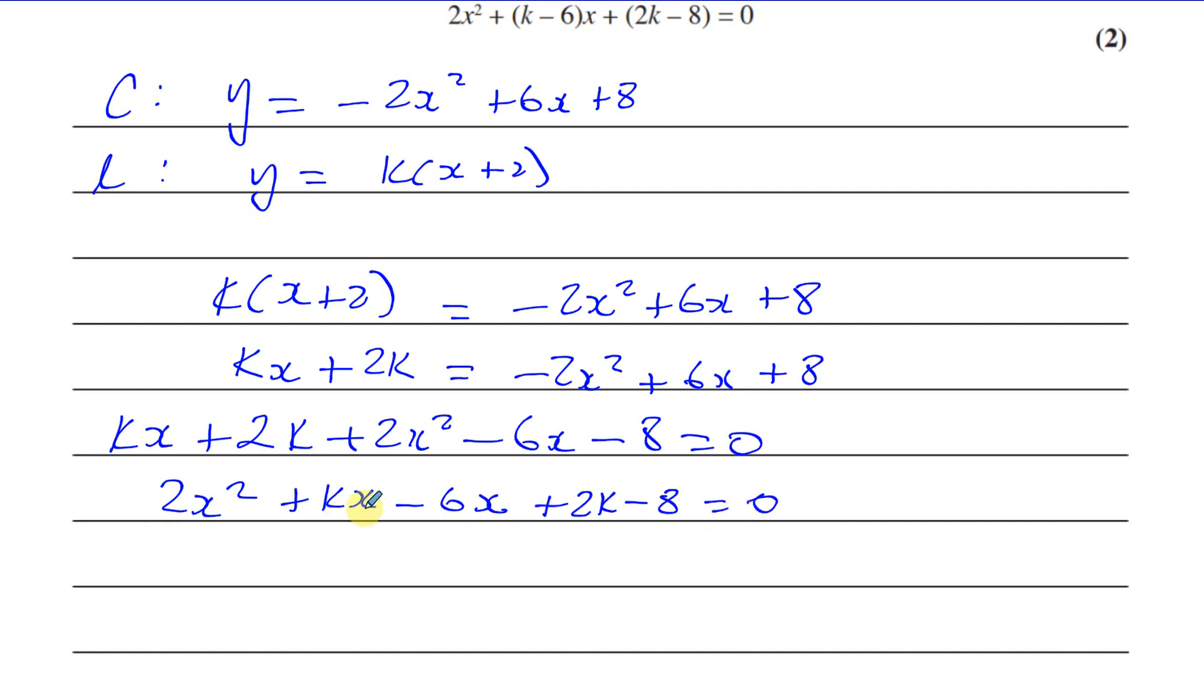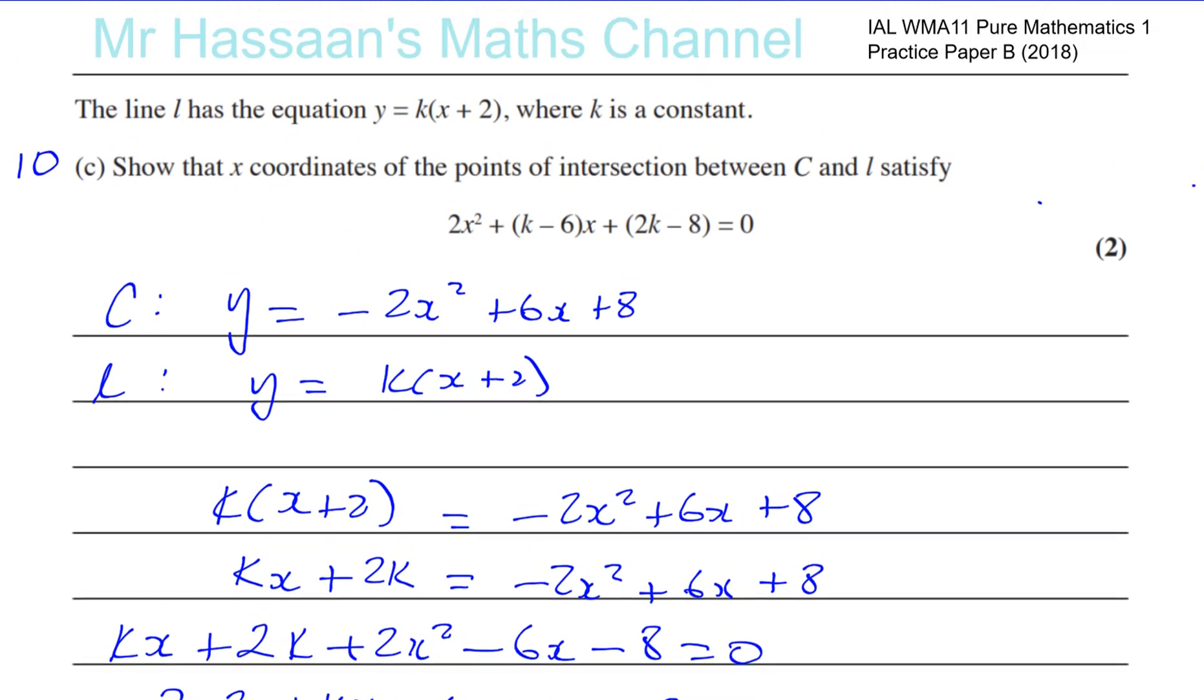Now I can just sort it out. So I want to have the 2x squared first. Then I'm going to have kx minus 6x, the x terms. And now I've got the constants, which is plus 2k and minus 8 equals 0. So we can see here x is common in these two. So I can write this as 2x squared plus, if I take out the common factor, k minus 6 times x. And I'm left with at the end the 2k minus 8. We've shown how this became that by equating them, by solving them simultaneously. That's the equation we get. That's for part C.